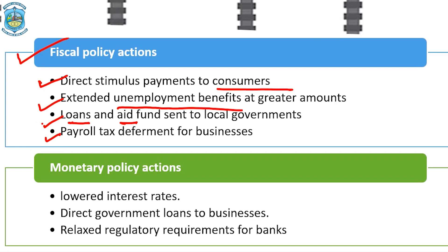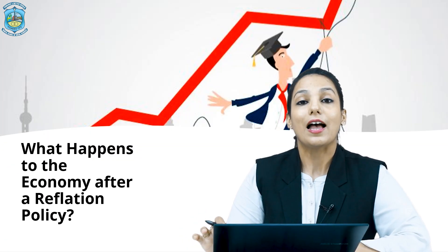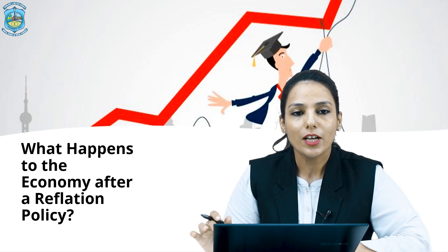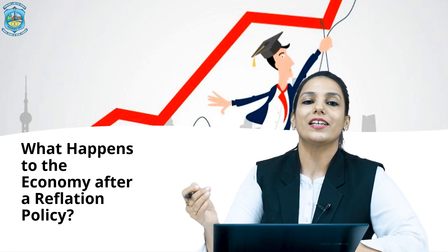The second set of policies relates to monetary policy actions, which can include lowering of interest rates, direct government loans to businesses, and relaxed regulatory requirements for banks. These measures help the economy come out of economic shocks or decreased economic activity.